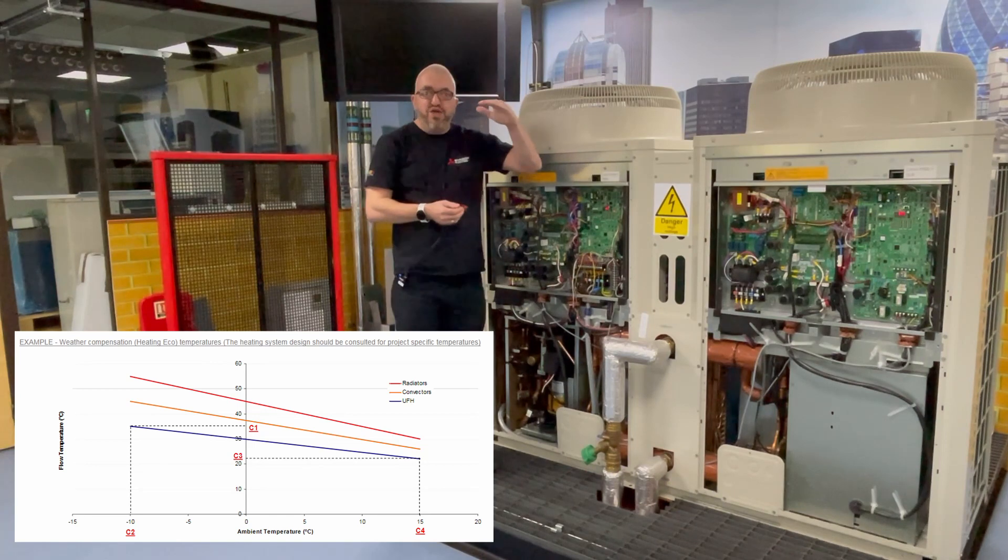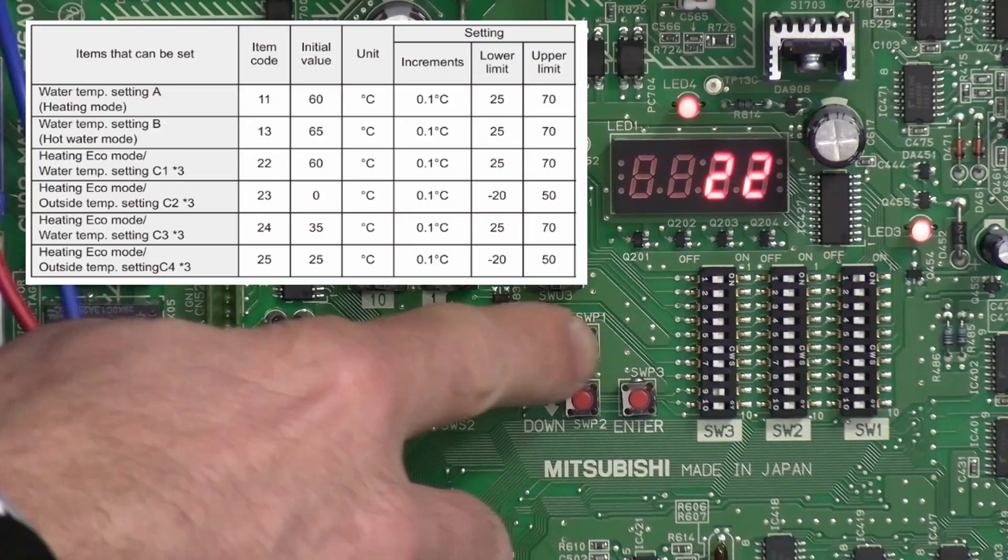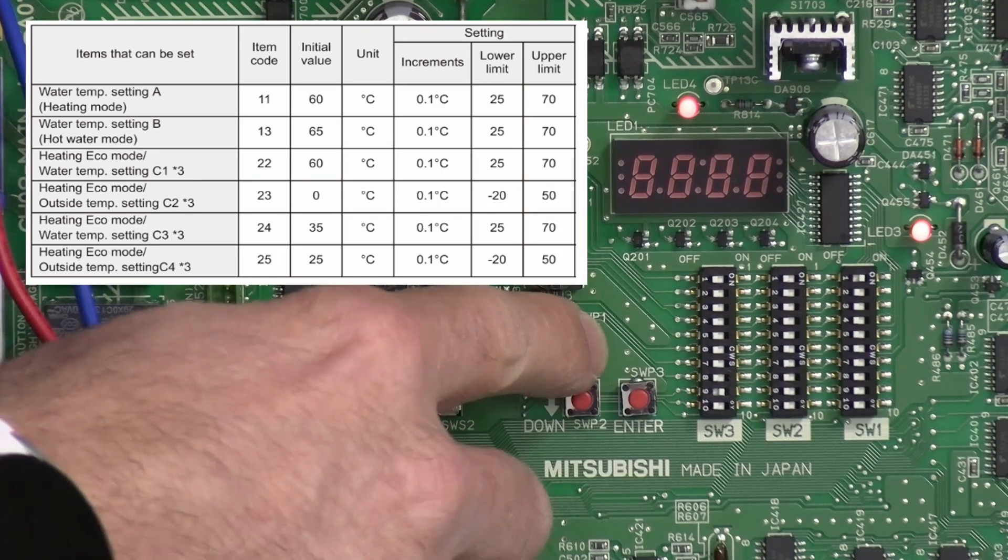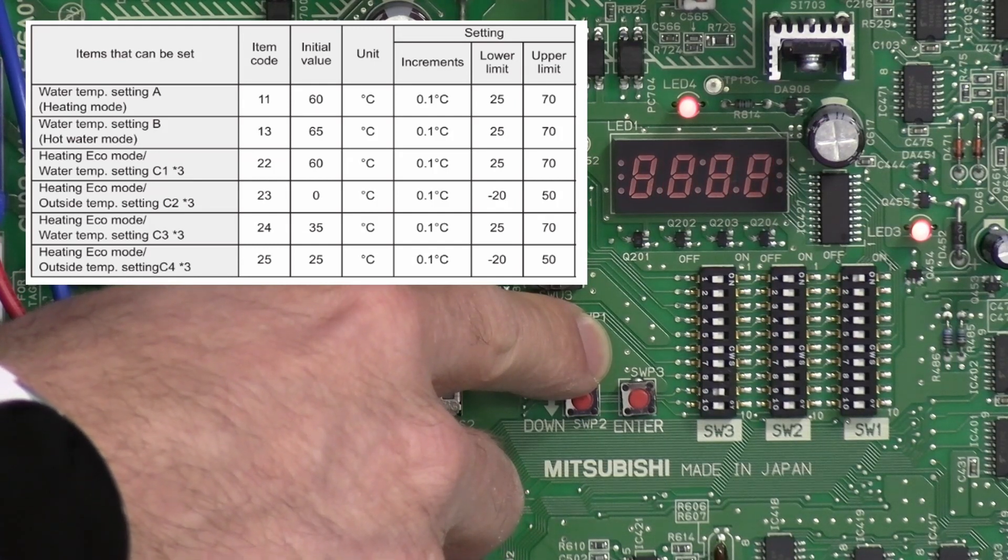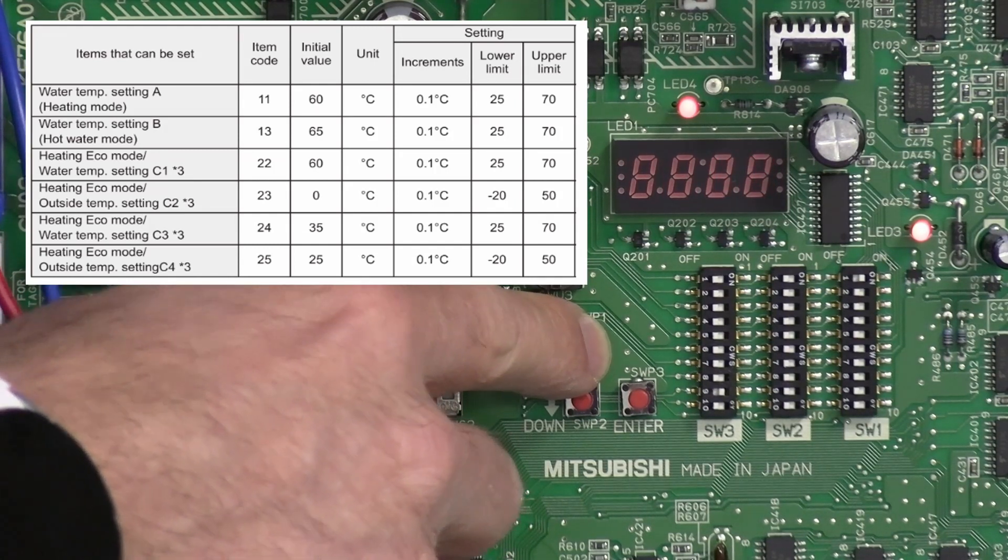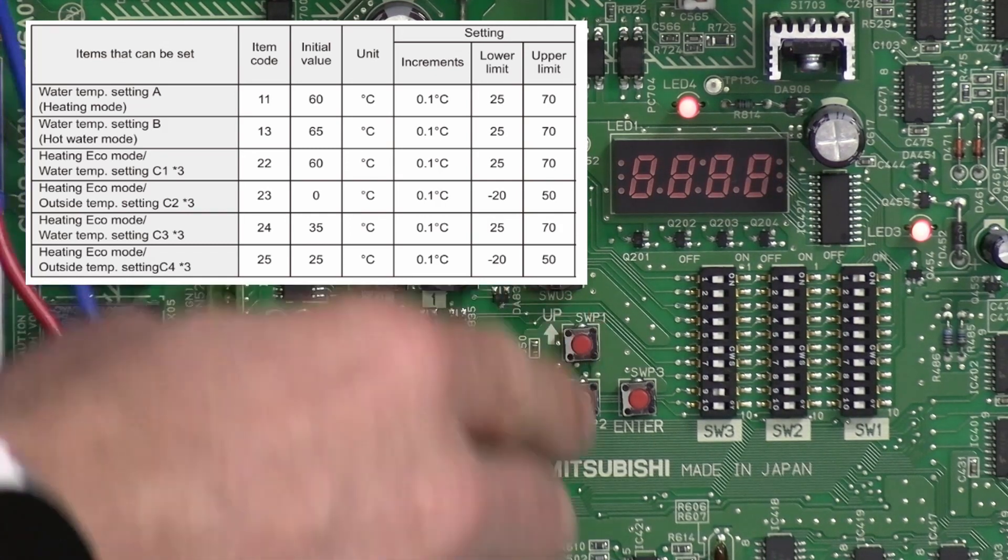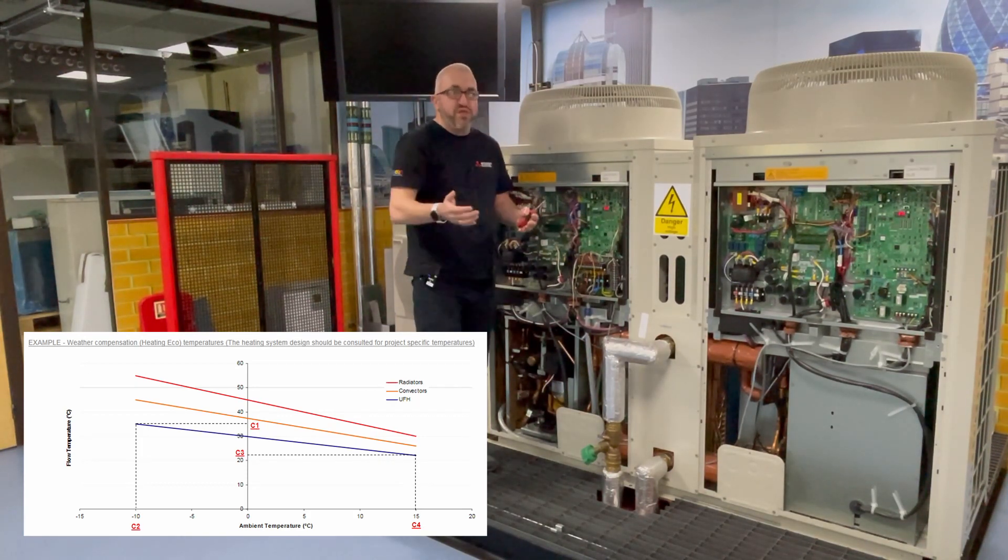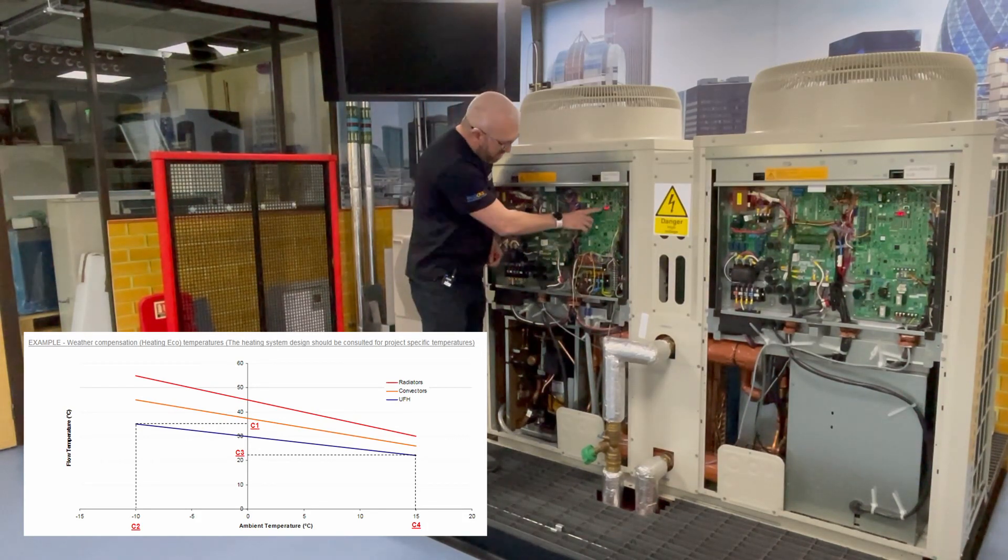So item 22, let's press the up button and it's currently set to 60 degrees. Let's increase that up, let's bump that up to say 65. Obviously these target temperatures will be in line with your design or you consult the specification, whatever you're working to. It could well be to do with your heater emitters, so what temperature heater emitters have been sized to.